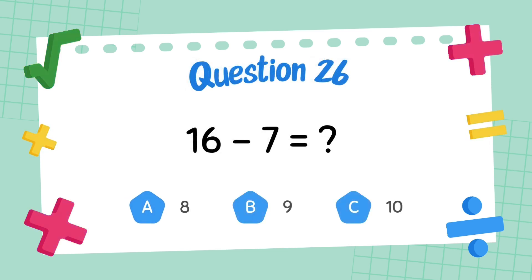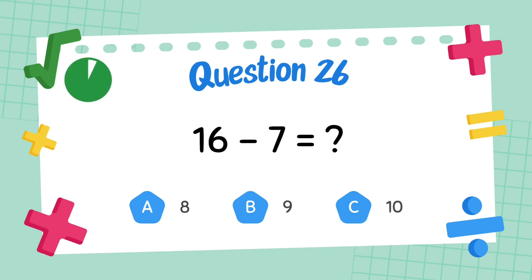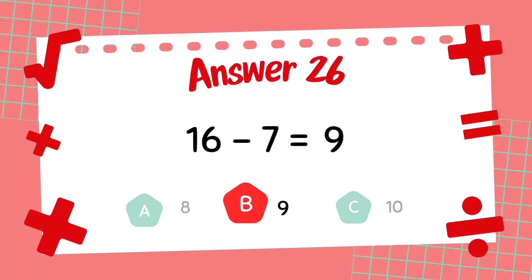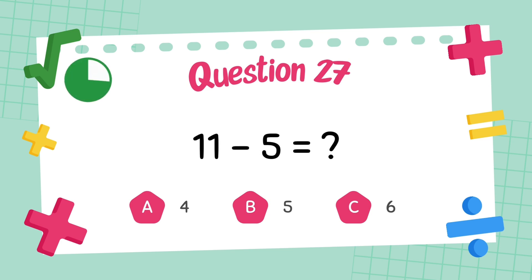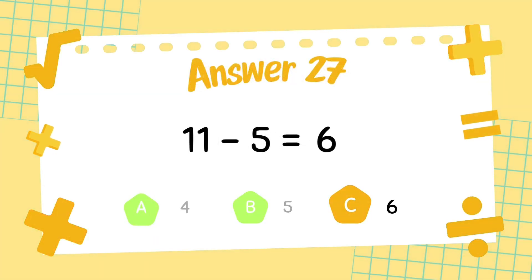What is 16 minus 7? The answer is 9. What is 11 minus 9? The answer is 6.